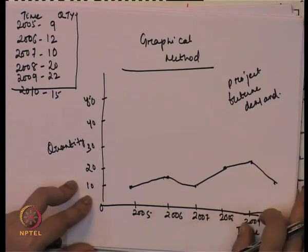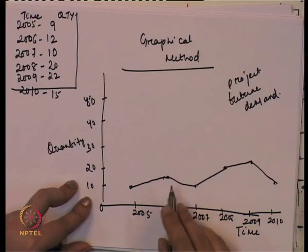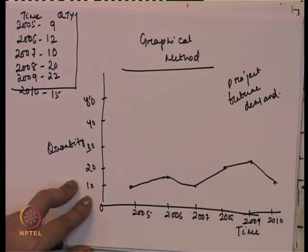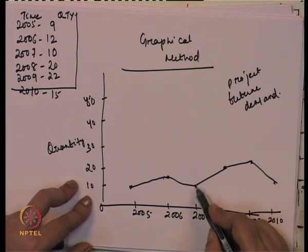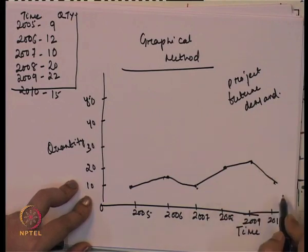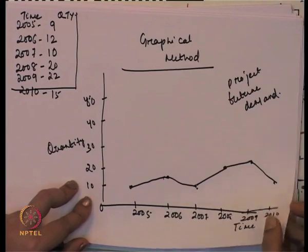In the graphical method, we first plot the data, look at how the series moves, assess the movement, and then forecast the future value. We need to understand why the value is less — for example, why demand declined in 2007 or why it follows a declining trend in 2010 — and whether those same factors should be considered when forecasting for the next five years. The graphical method is simply plotting the dependent variable against time and assessing the series to forecast future demand.